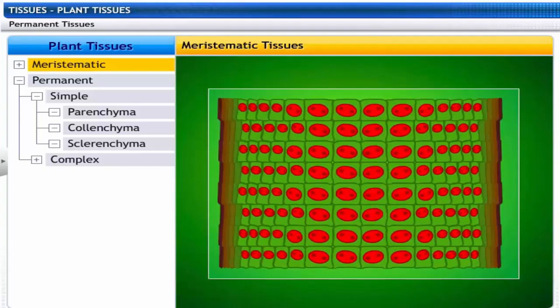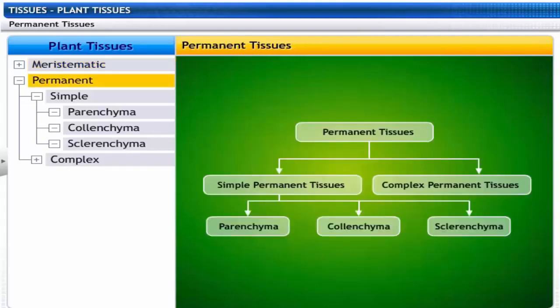Take a look at what eventually happens to meristematic tissues. Old meristematic cells lose the capacity to divide and transform into permanent tissues. This process of taking up a permanent shape, size and function is called differentiation. Permanent tissues can be simple or complex depending upon their structure and function.